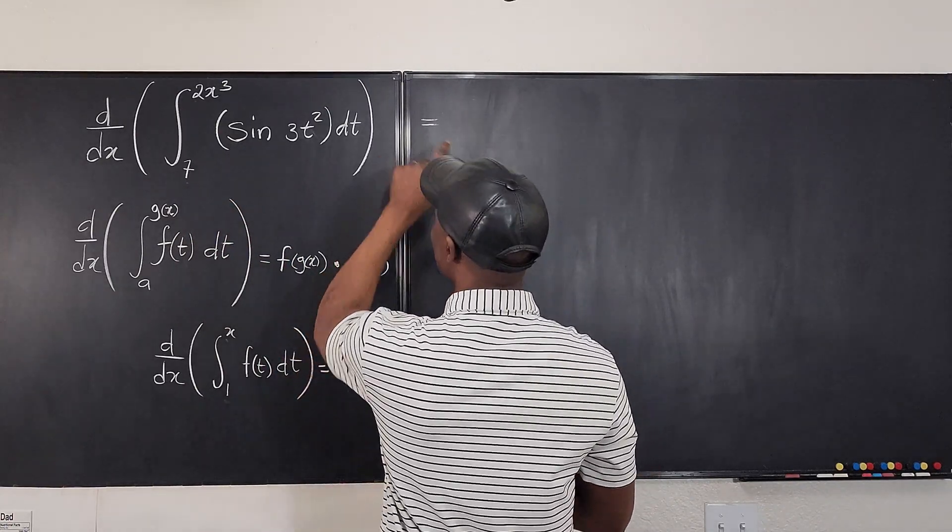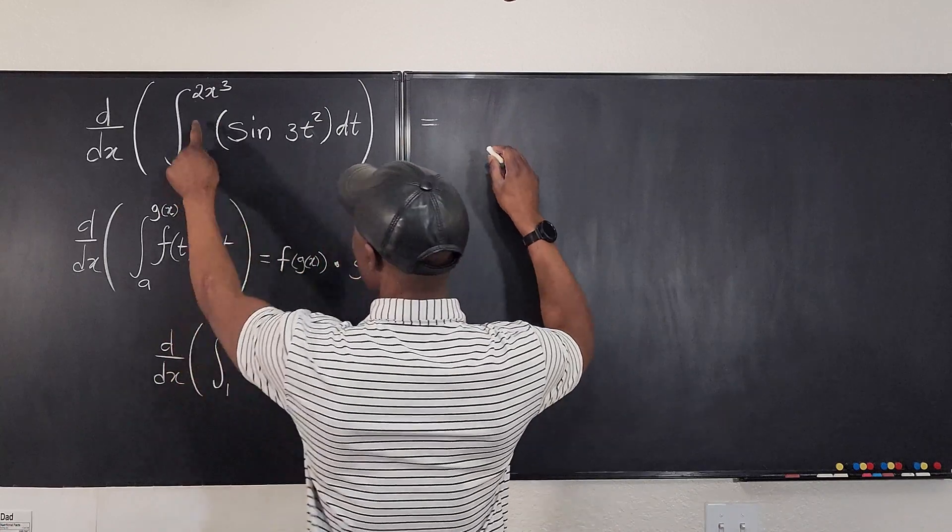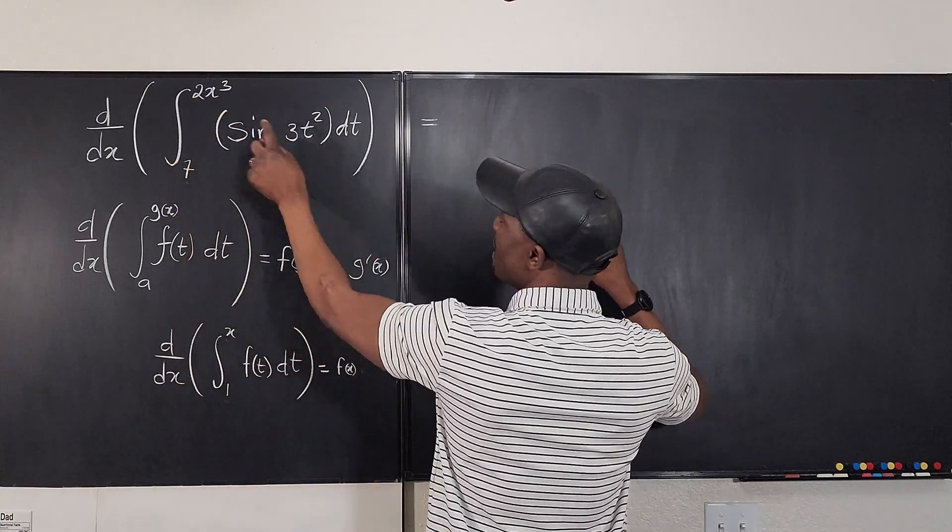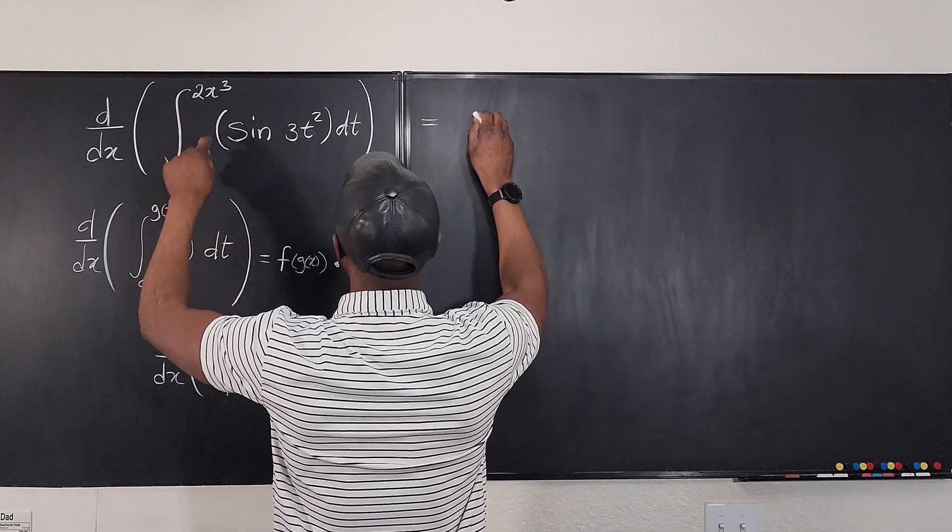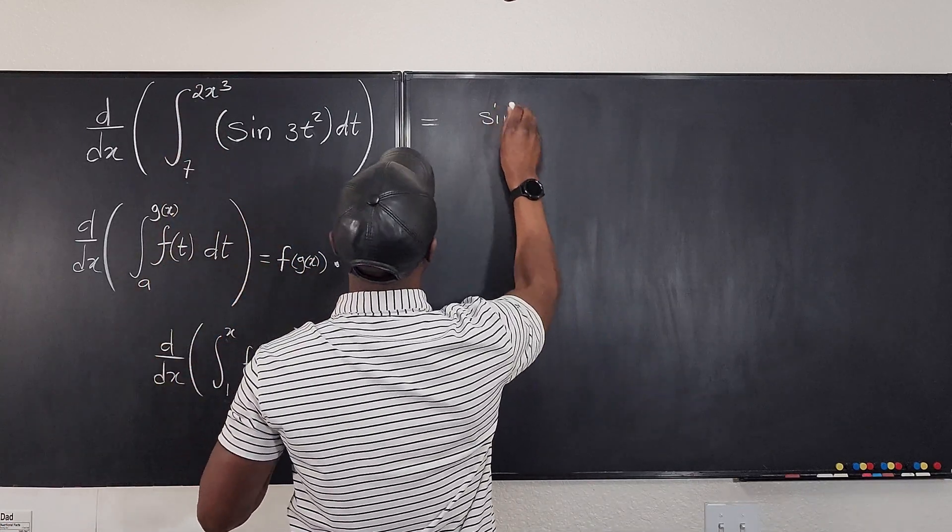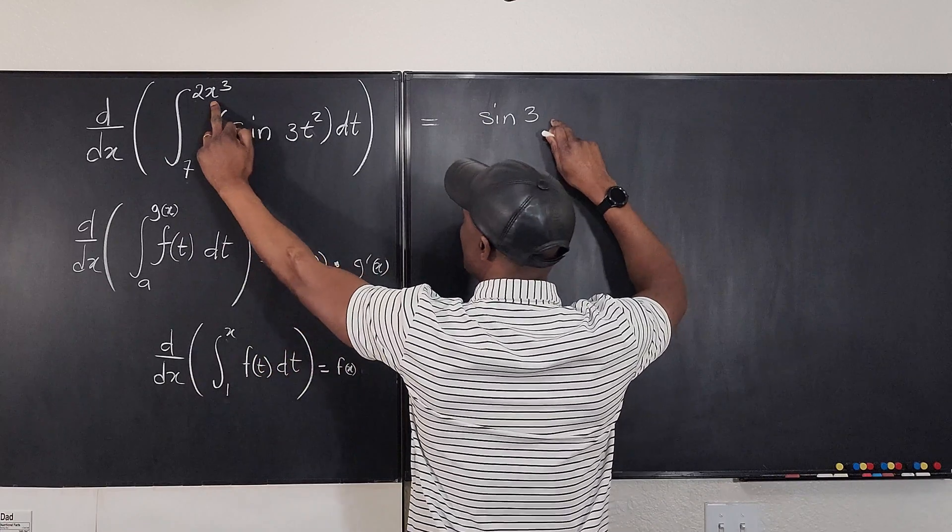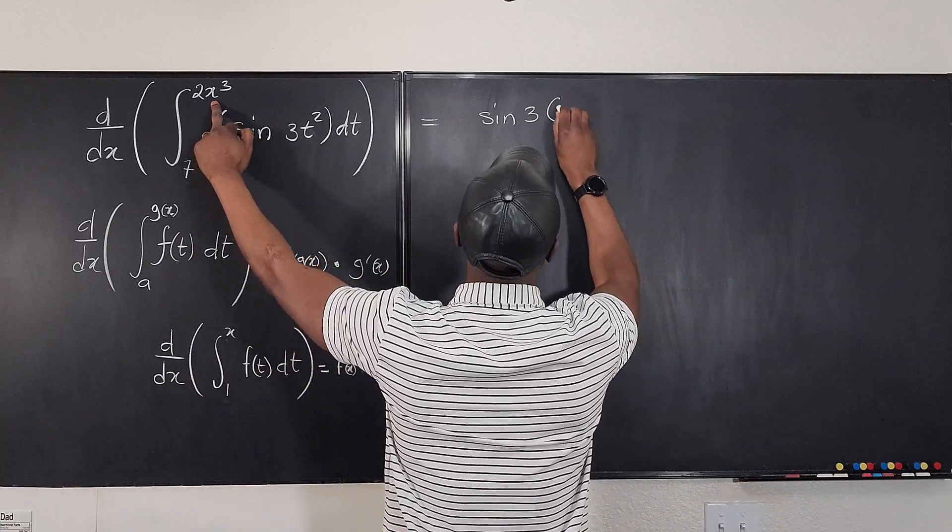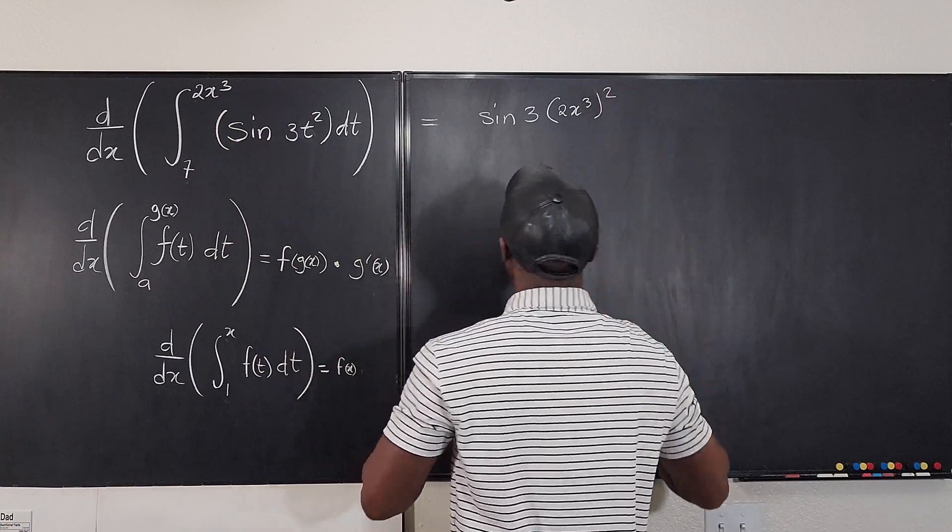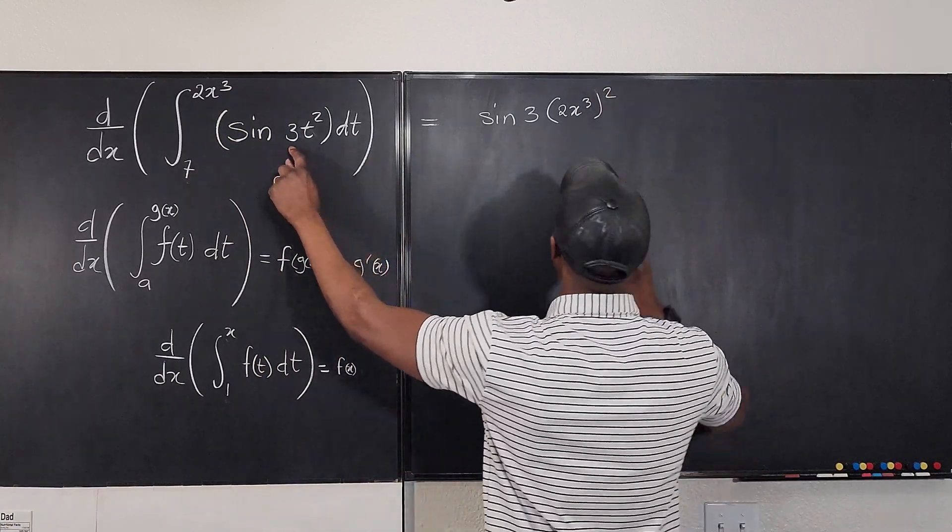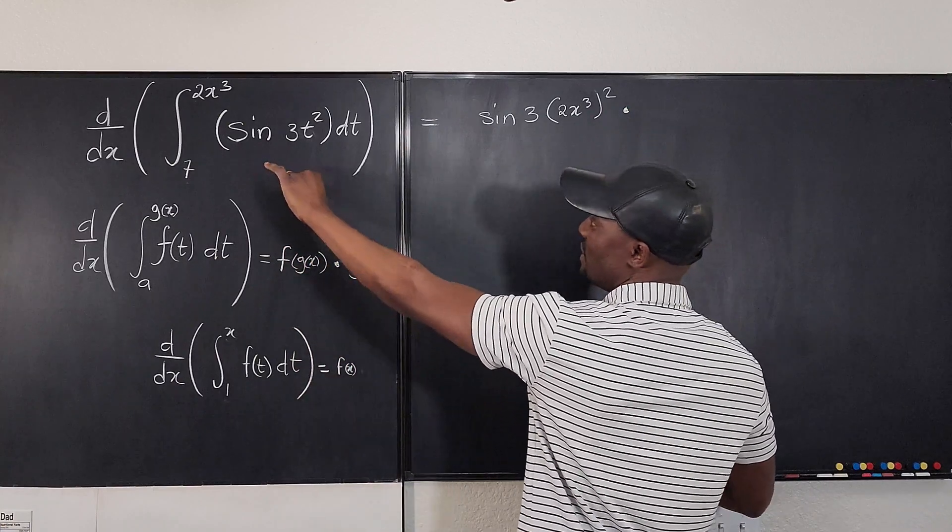So this is going to be what? We're going to replace t with this entire function. So here we're going to have sine 3, the t will be replaced by 2x cubed, squared. You see that? The t has been replaced. And then you have to multiply this by the derivative of this, which is the derivative of 2x cubed.